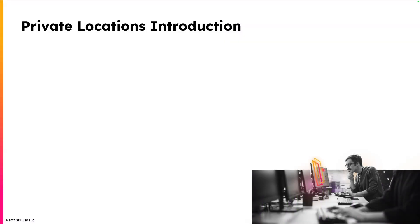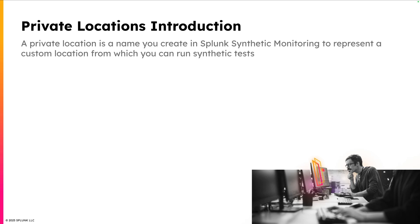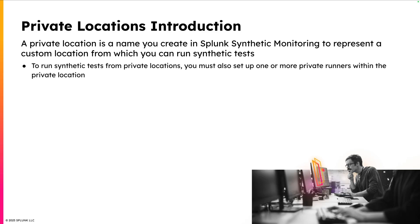First, I'd like to provide a brief summary of what they are and why you would use private locations. Then I'll demonstrate how you can create a private location to perform synthetic testing on an application running in a Kubernetes environment. A private location is a name you create in Splunk Synthetic Monitoring to represent a custom location from which you can run synthetic tests. And to run synthetic tests from private locations, you must also set up one or more private runners within the private location to do the actual communication with your test targets and with Splunk Synthetic Monitoring.